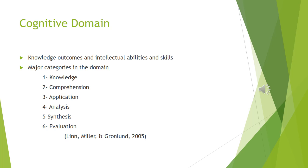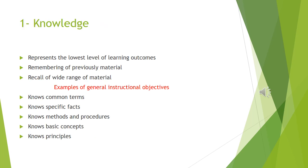Major categories in the cognitive domain, starting from the lowest, are: No. 1 Knowledge, No. 2 Comprehension, No. 3 Application, No. 4 Analysis, No. 5 Synthesis, No. 6 Evaluation.